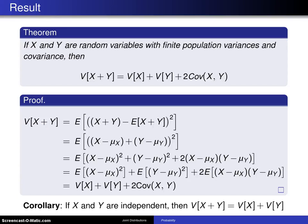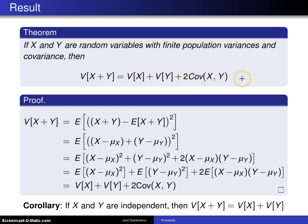Here is a result that involves covariances. If x and y are random variables with finite population variances and covariance, then the variance of x plus y is the variance of x plus the variance of y plus twice the covariance of x and y. Here is the proof starting on the left-hand side.